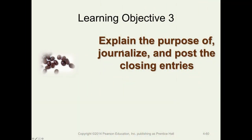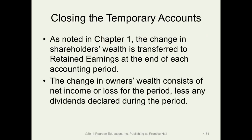Moving to the third module for chapter four, we now want to look at the journalization and posting of the closing entries. We covered this briefly when we talked about the types of accounts closing entries apply to: the temporary accounts — revenues, expenses, and dividends. When we looked at chapter one, we know that the change in owner's wealth is transferred to retained earnings at the end of each accounting period — net income or net loss minus any dividends.